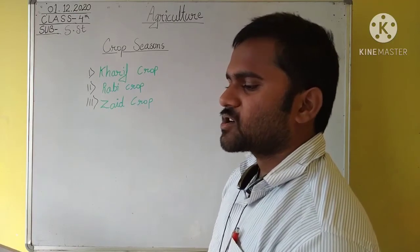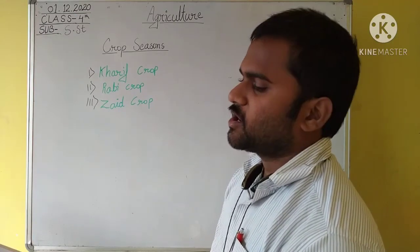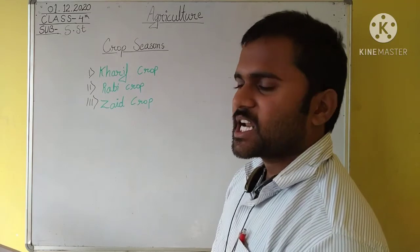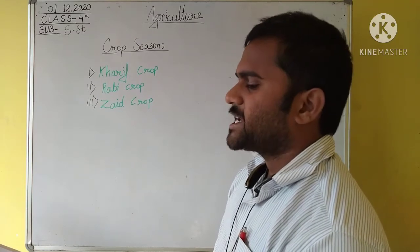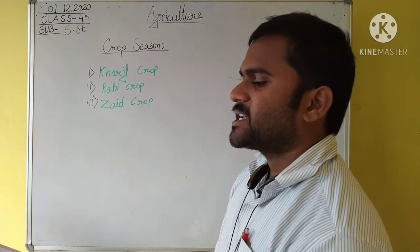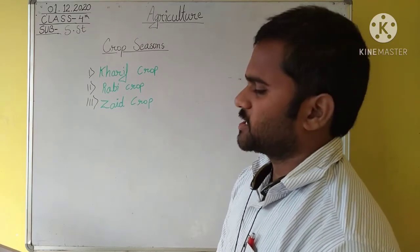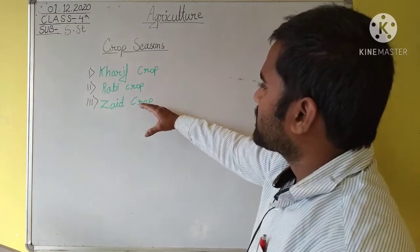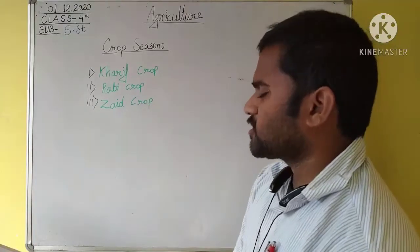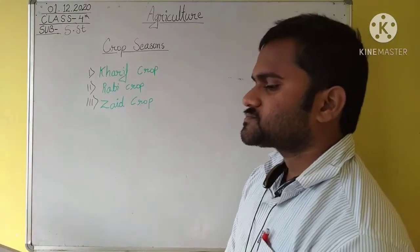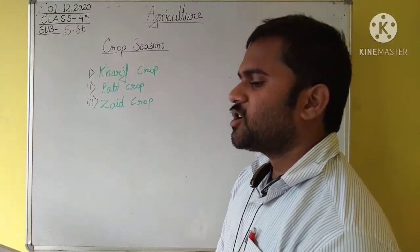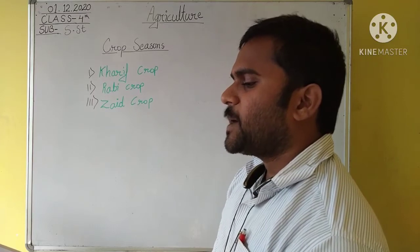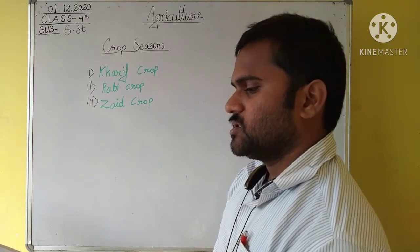The second one is Rabi crop. Rabi season remains from October to March. The crops grown in this season are called Rabi crops. The main Rabi crops are wheat, gram, barley, mustard, and some pulses.